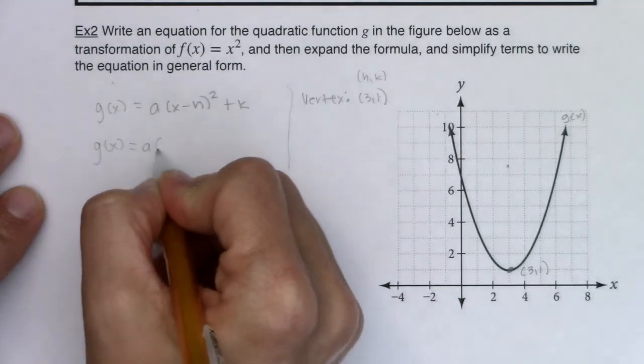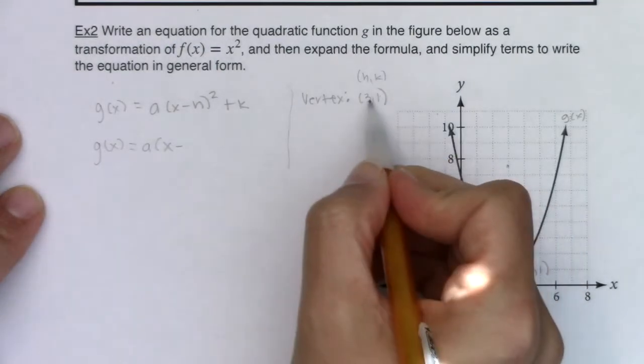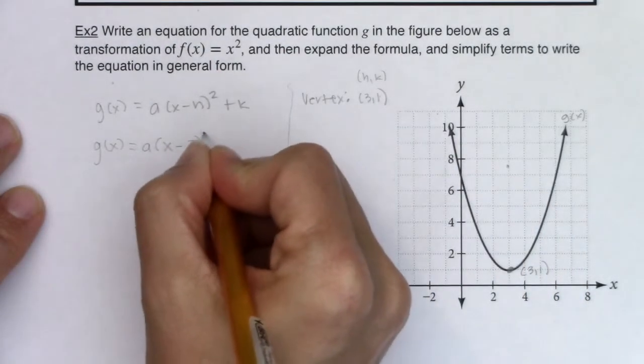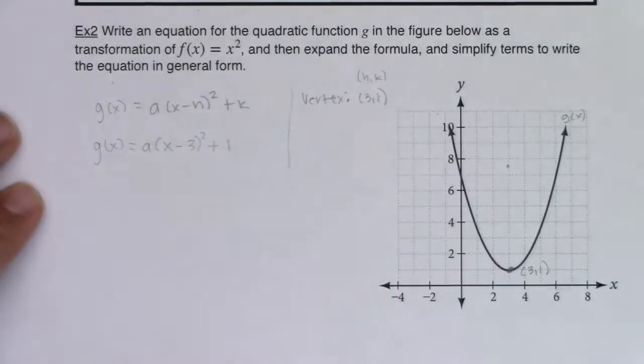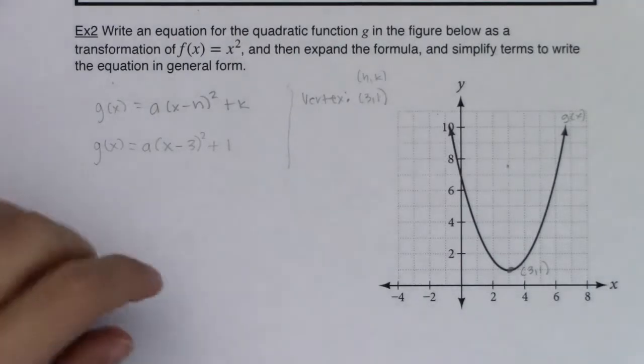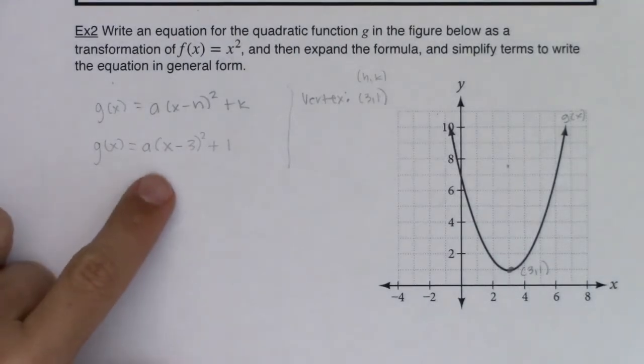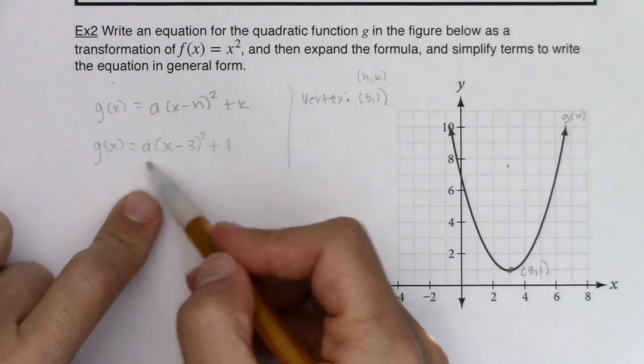So let's go ahead and plug that in here. We know g(x) is equal to a times (x - 3)² + 1. So I'm a little bit closer to being able to figure out the vertex form of my parabola. The only thing I'm missing is this a value.